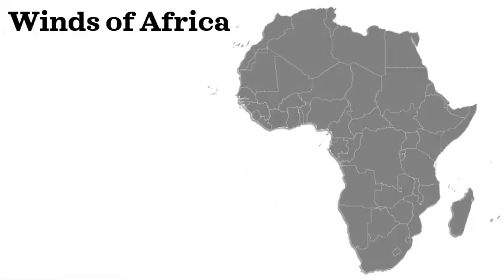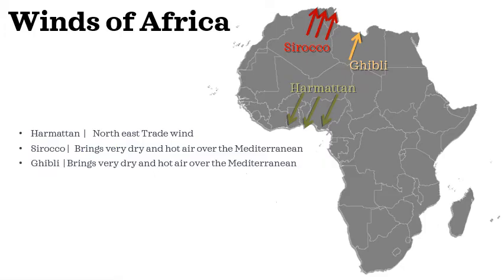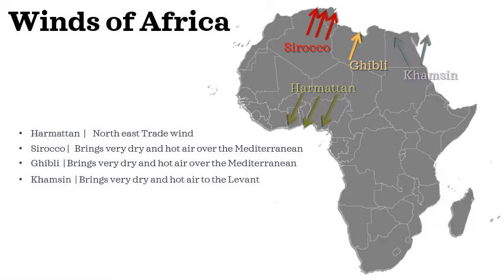The harmattan is not the only wind in Africa — there are many winds, so let's take a look at the major winds of the African continent and their local names. The harmattan is a northeastern trade wind blowing from the southern Sahara towards the Gulf of Guinea. The Sirocco is a hot, extremely dry southern wind that brings heat and dust from Algeria and Tunisia to the Mediterranean and southern Europe — and when conditions are favorable this red dust can even reach northern parts like the Netherlands and Scandinavia. The Ghibli is a hot, extremely dry south wind that blows from Libya towards Greece. The Khamsin is a hot, extremely dry south wind that brings heat, dust, and sand to the Levant and the Arabian Peninsula.